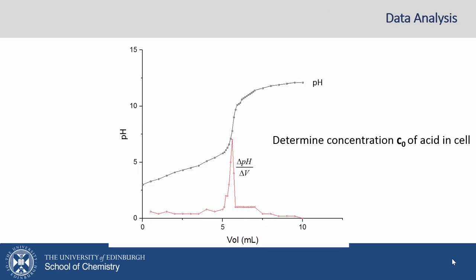How do we go about the data analysis? Well, we're going to have a pH curve, and you're asked to draw both the pH curve and the differential curve so that we can accurately determine the endpoint volume. From this endpoint volume, we can determine the concentration C0 of the acid in the cell initially.